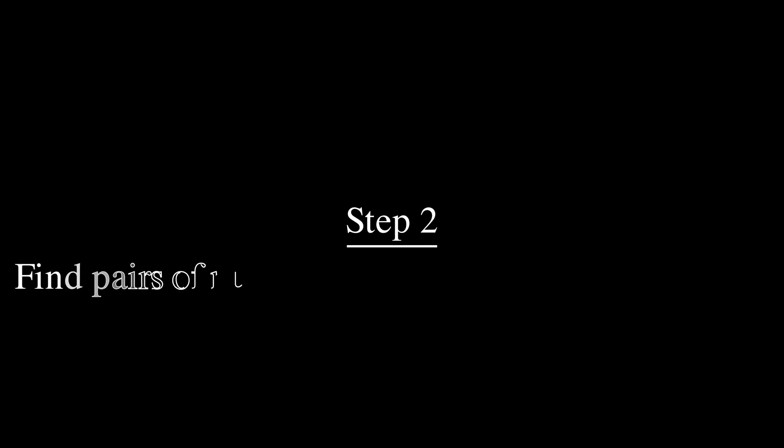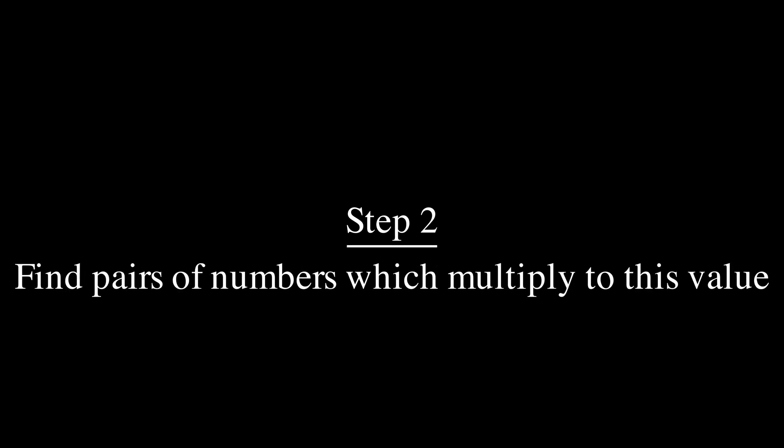Step two is to try to find all of the pairs which multiply to this number. Now it turns out you don't really need to find all of them, but go ahead and write down as many numbers as you can that multiply to the magenta value for now. Pause the video and resume when you're ready to continue.